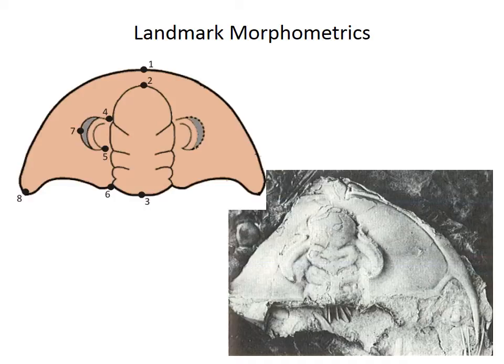These slides introduce landmark morphometrics, a technique for quantifying and analyzing shape. You will use this technique to classify trilobite specimens using phonetic classification and assess ontogenetic shape change in those species.